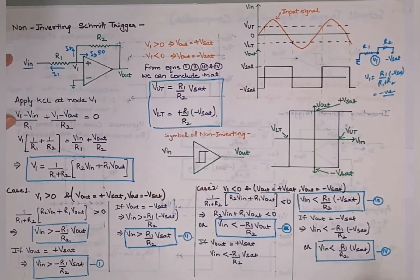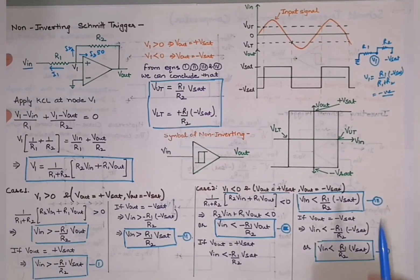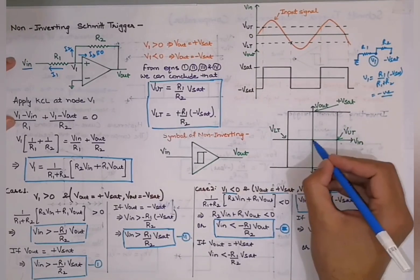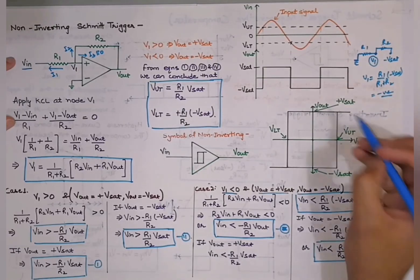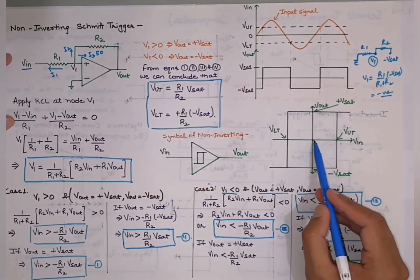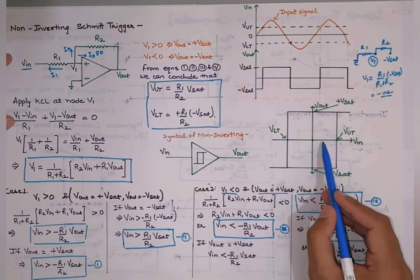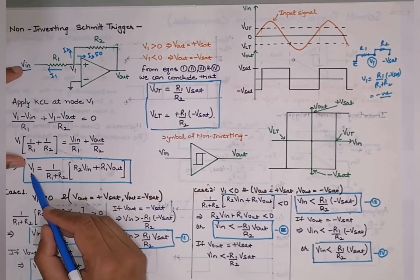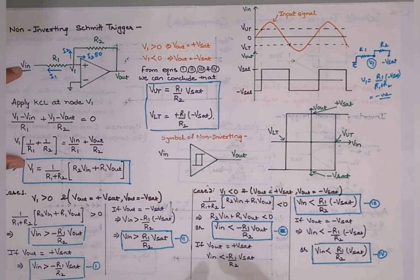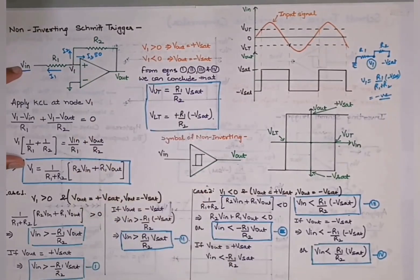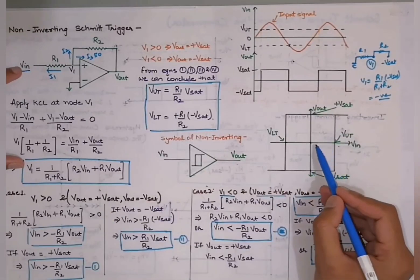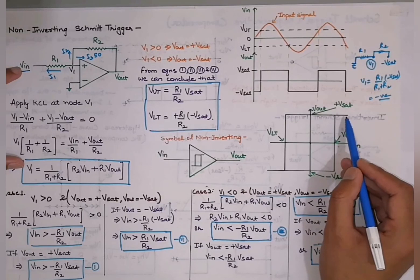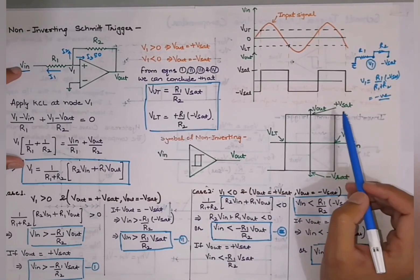Now let's discuss the hysteresis curve for the non-inverting Schmitt trigger, similar to the inverting case. This is a graph of output voltage versus input voltage. Assuming initial Vin = 0 and Vout = +Vsat: as Vin increases in the positive direction, V1 is already greater than 0, so increasing Vin further has no impact on the output — it remains at +Vsat even after crossing the upper threshold.